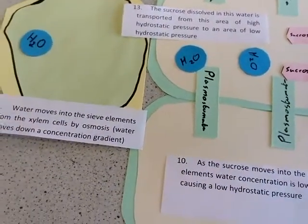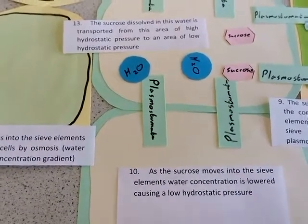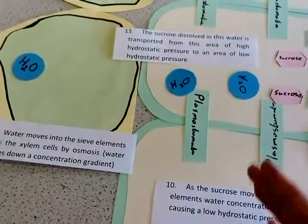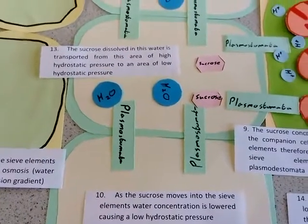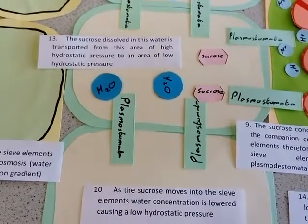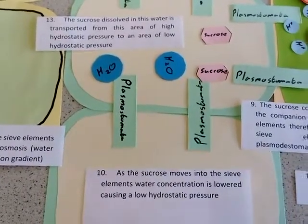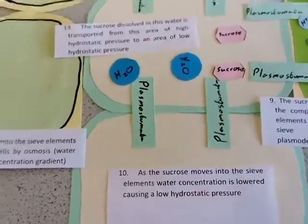Once the hydrostatic pressure decreases at the sink, the water will diffuse out of the phloem sieve elements into the sink, somewhere in a root, that will carry the sucrose with it, and the sucrose will be stored in those sink areas.